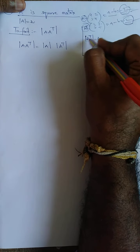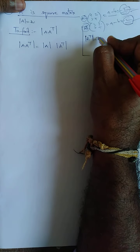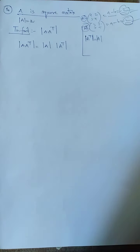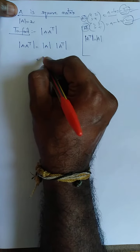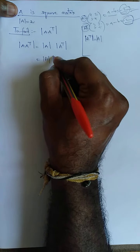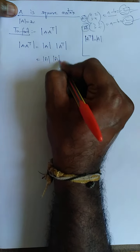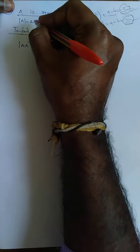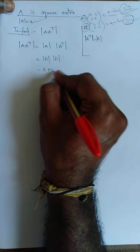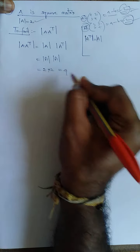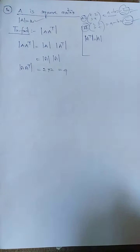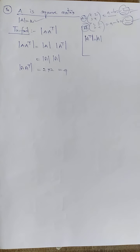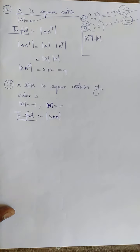So det(Aᵀ) is nothing but det(A). Therefore, det(A·Aᵀ) = det(A) × det(Aᵀ) = det(A) × det(A) = det(A)². Given det(A) = 2, det(A)² = 2² = 4. Therefore, determinant of A·Aᵀ is equal to 4. This is the 16th sum.